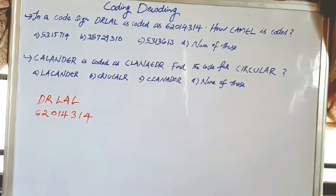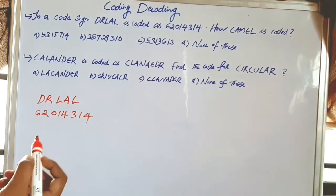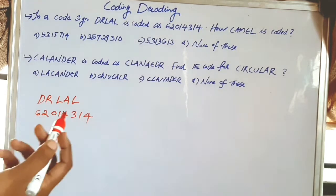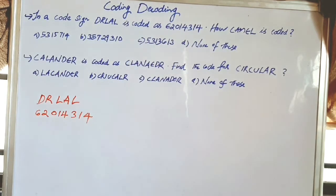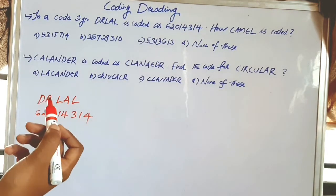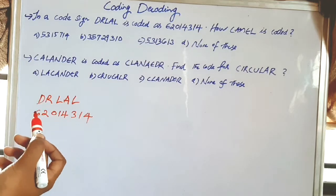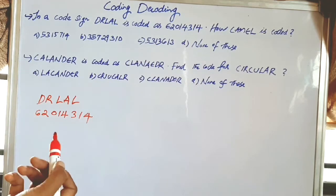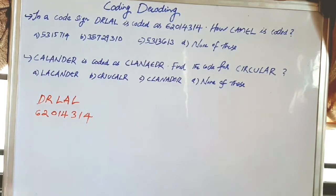We will see direct coding — we covered that in the previous video on coding and decoding. Here we will use the positional values of the letters.